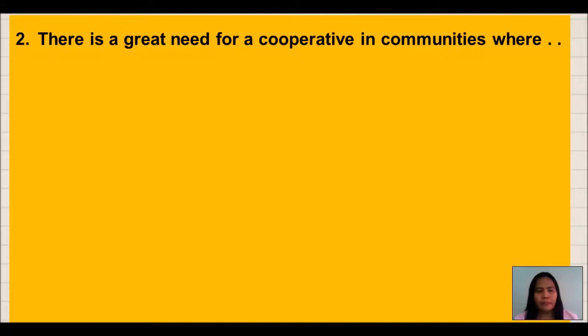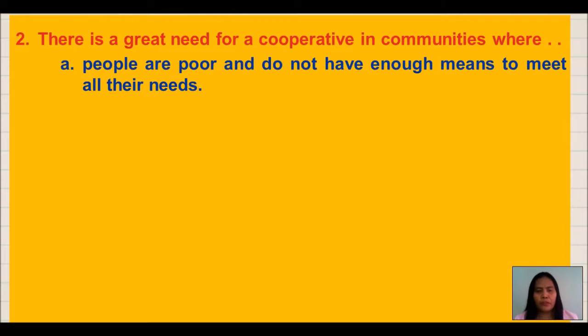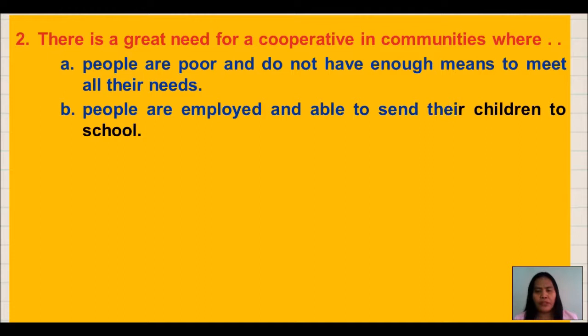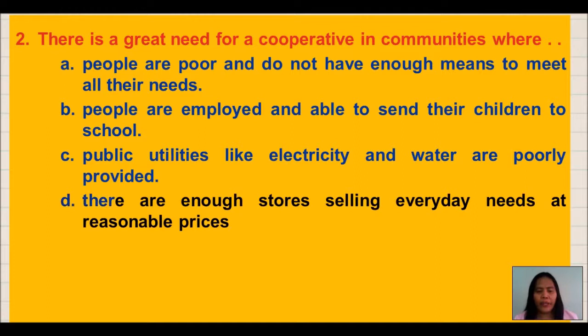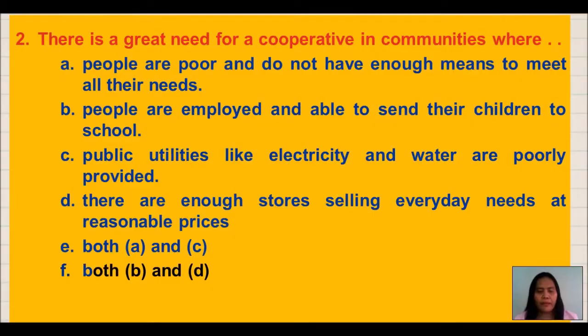Number 2: There is a great need for a cooperative in communities where — A. People are poor and do not have enough means to meet all their needs. B. People are employed and able to send their children to school. C. Public utilities like electricity and water are poorly provided. D. There are enough stores selling everyday needs at reasonable prices. E. Both A and C.